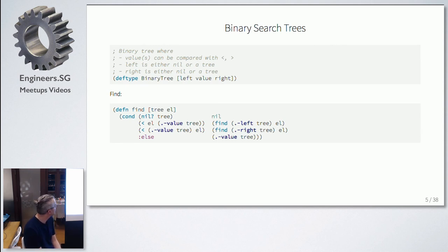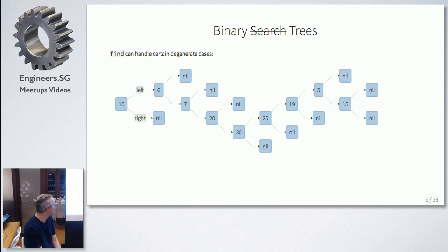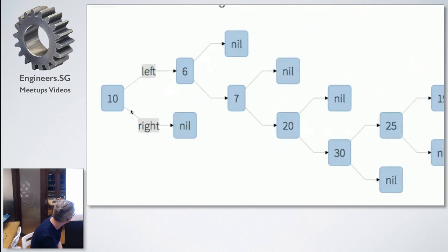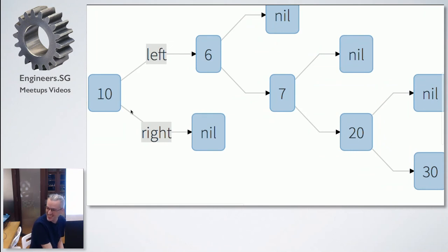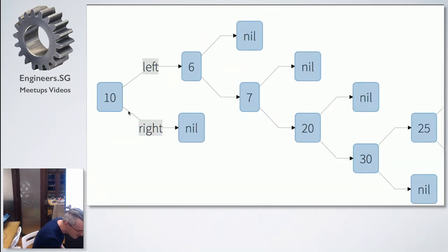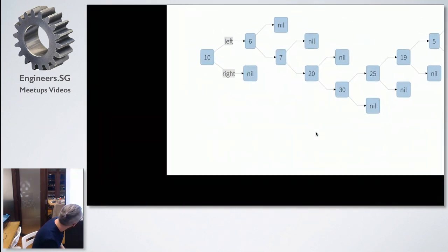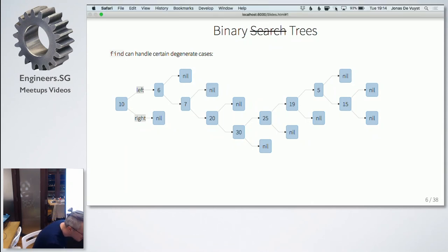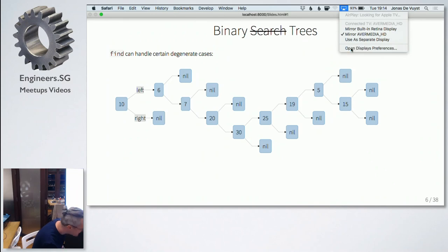An interesting thing about this algorithm is that it can actually handle a lot more cases than actual binary search trees. There's a tree here — though there appear to be some arrows missing in the diagram.